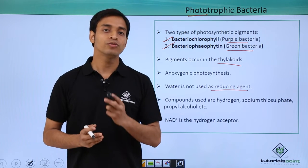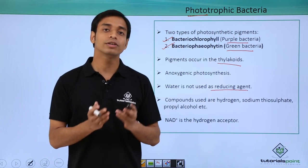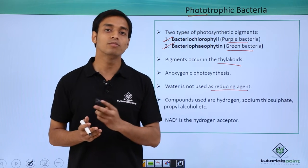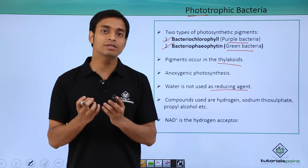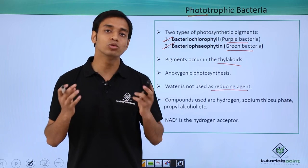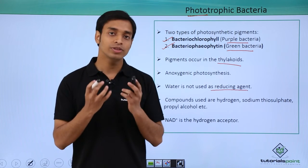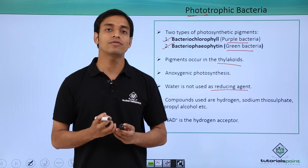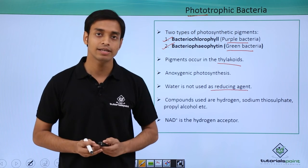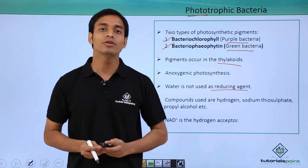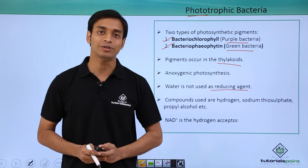In this video we talked about phototrophic bacteria and the phototrophic mode of nutrition in bacteria. We saw that these bacteria are mostly found at the bottom of lakes because the concentration of oxygen at these areas is very low. I hope you have understood and enjoyed this video. Thank you.